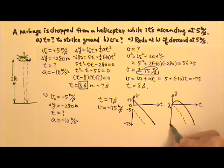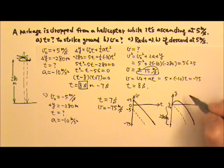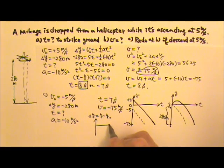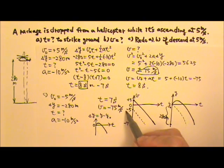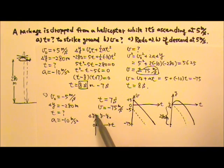If instead I plot delta Y — which is final position minus initial position — versus time, the initial displacement will be 0, so the graph shifts to start at 0. For the ascending case it goes up then curves down. If the package starts with negative 5 meters per second, the graph is a downward curve from the start. These two graphs are the same shape, except the position graph starts at the initial position while the displacement graph starts at 0.